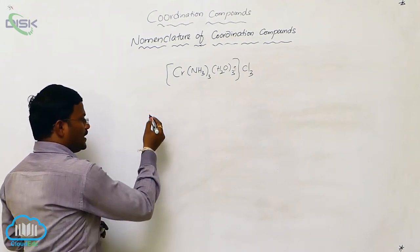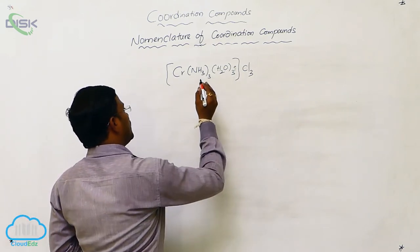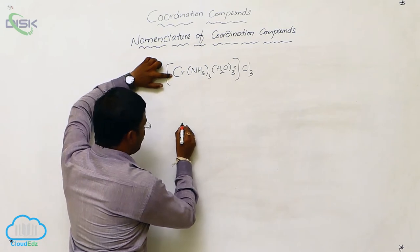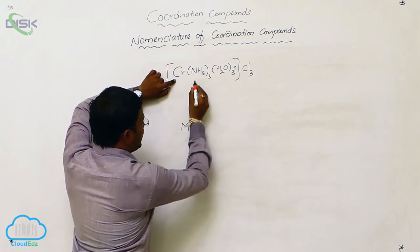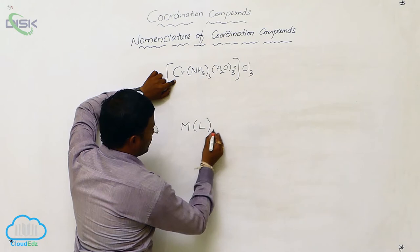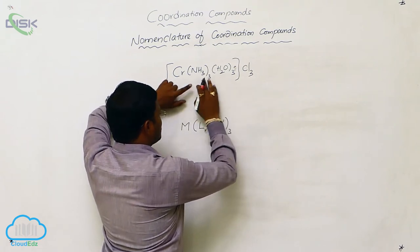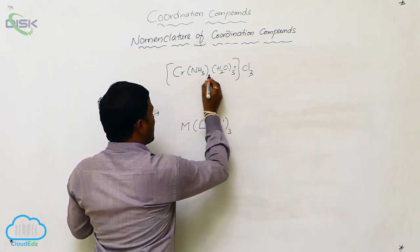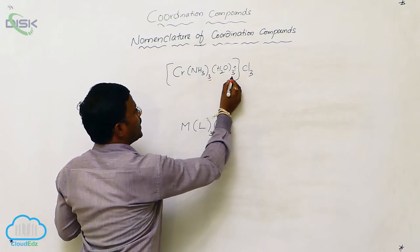Let us take the nearly nine rules and provide the name for this compound, but before going to learn about nomenclature, I would like to represent this — chromium is the central atom or metal atom, indicated as M, with two different types of ligands present inside the coordination sphere. Three ammonia and three water molecules form coordination covalent bonds with chromium.